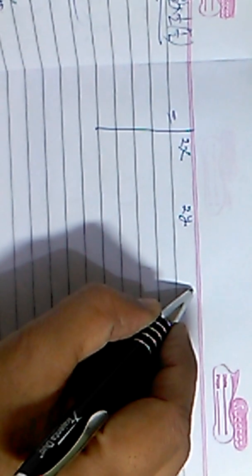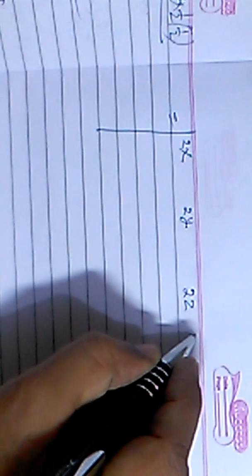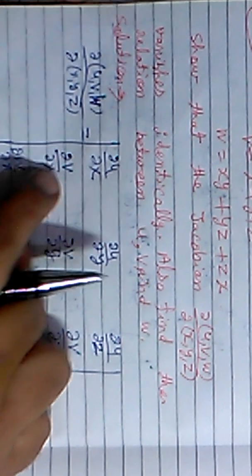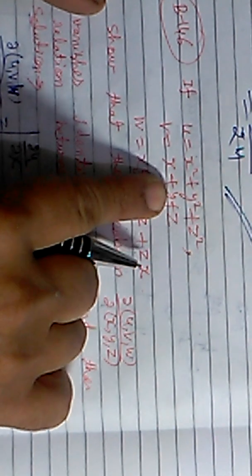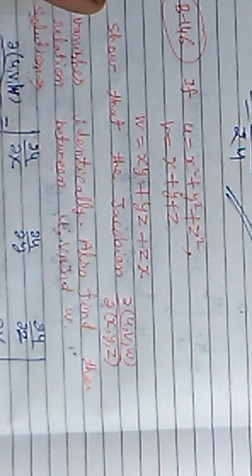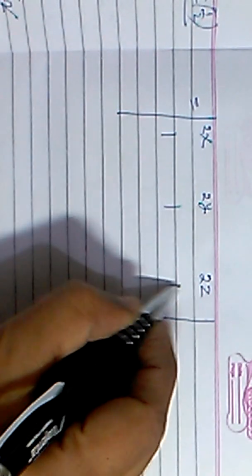For the second row, we differentiate v with respect to x, y, and z. Since v = x + y + z, differentiating with respect to x gives 1 (y and z are constant, so they give zero). Similarly, differentiating with respect to y and z each gives 1. So the second row entries are all 1, 1, 1.